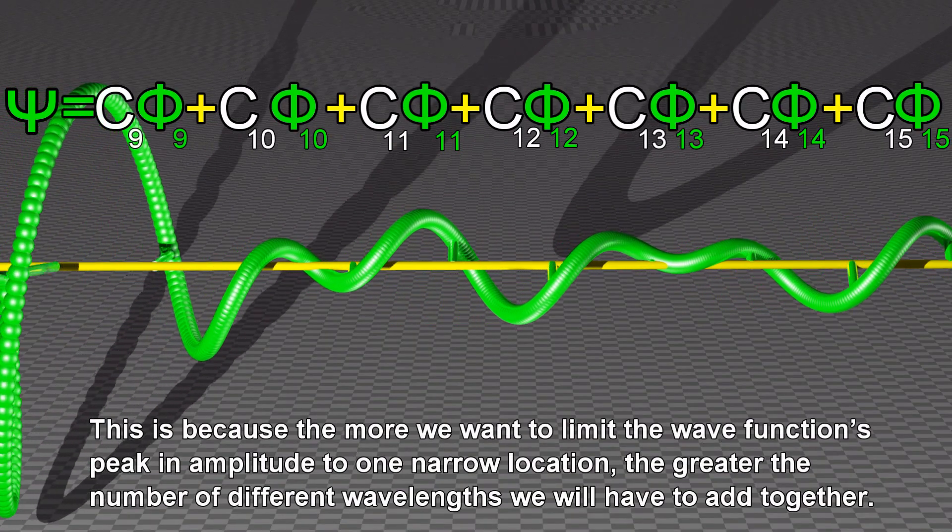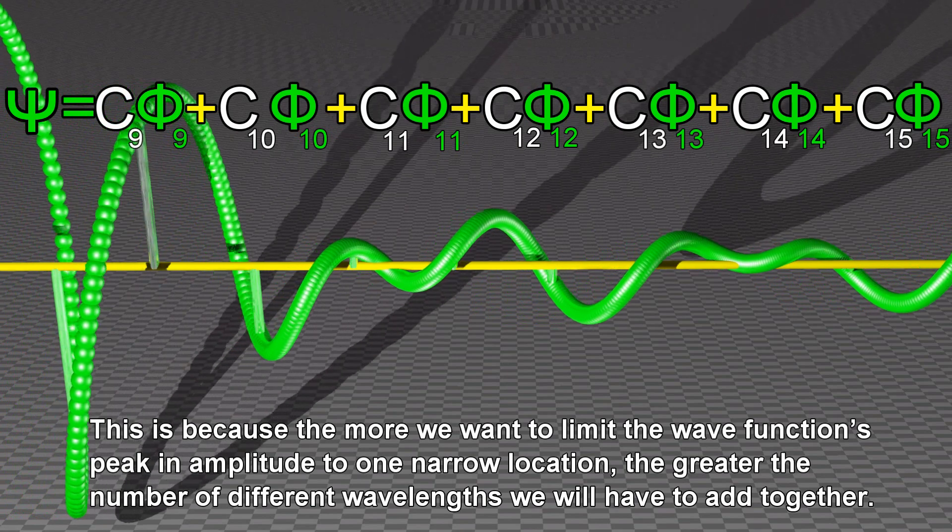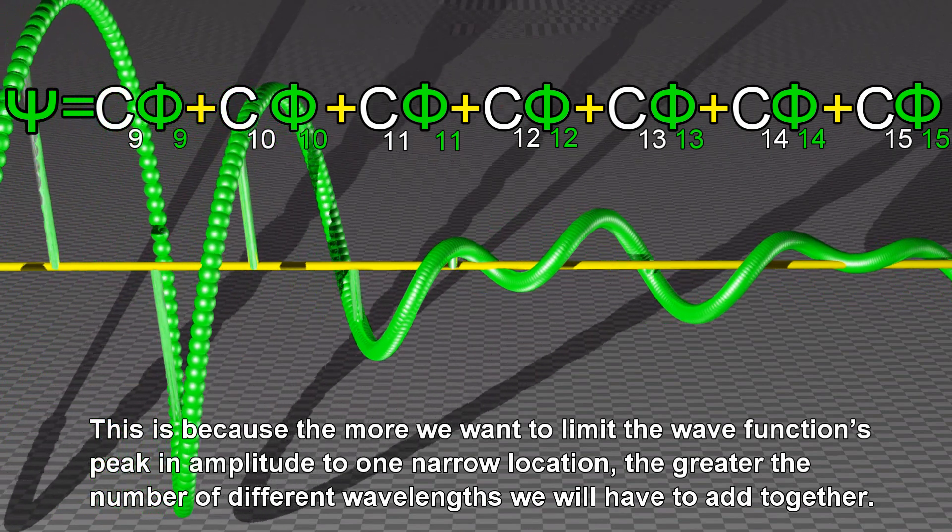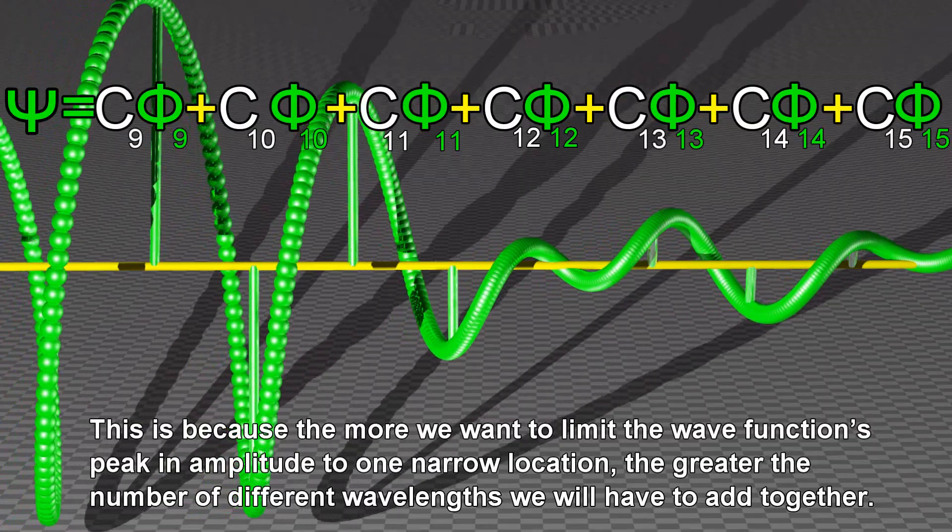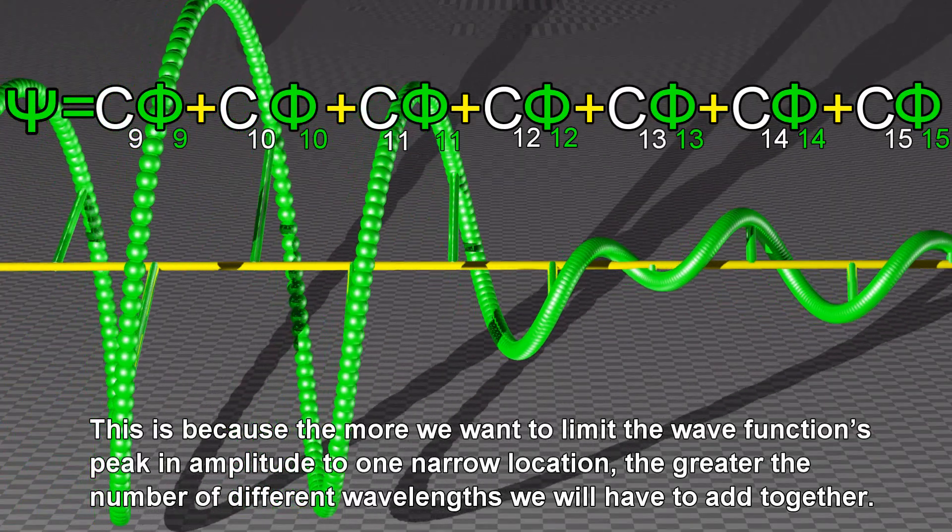This is because the more we want to limit the wave function's peak and amplitude to one narrow location, the greater the number of different wavelengths we will have to add together.